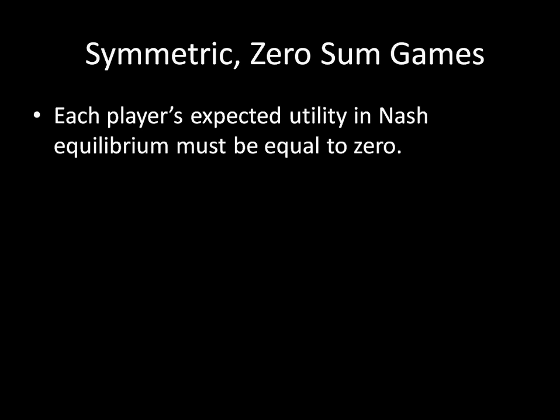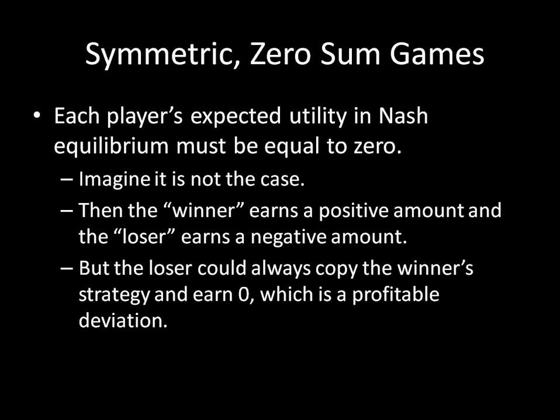Let's think about why that's the case. Imagine that it's not the case — both players aren't earning zero, so there's one player earning a positive amount and another earning a negative amount. We call the winner the player earning the positive number and the loser the player earning the negative number. But if the loser is getting a negative amount, the loser could always just copy the winner's strategy and earn zero, which is a profitable deviation for the loser.